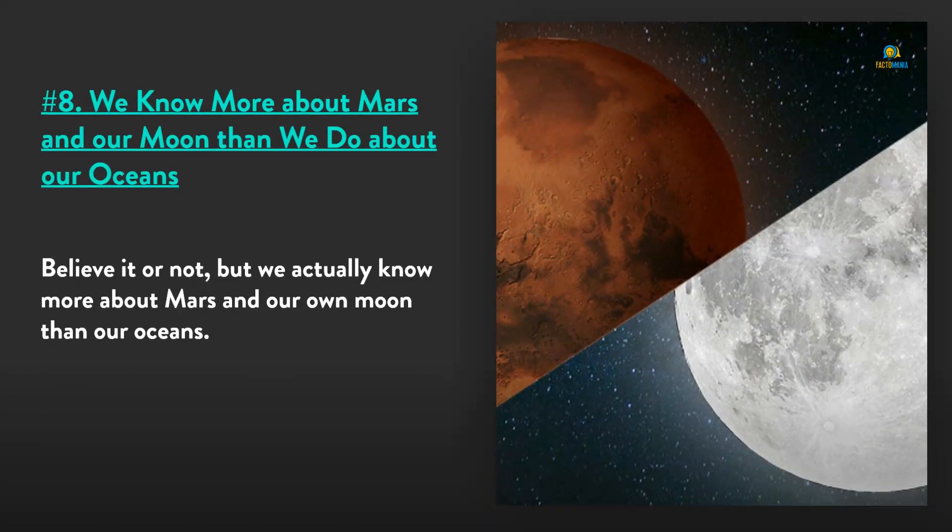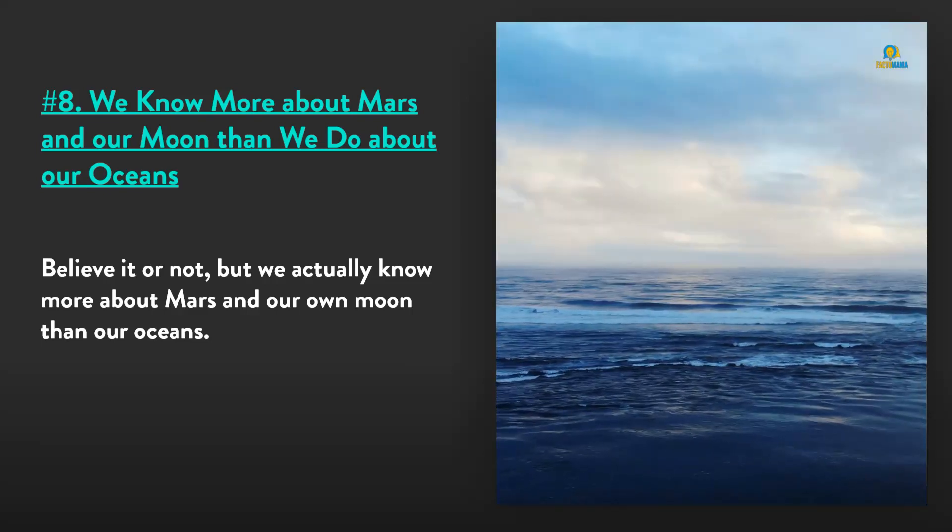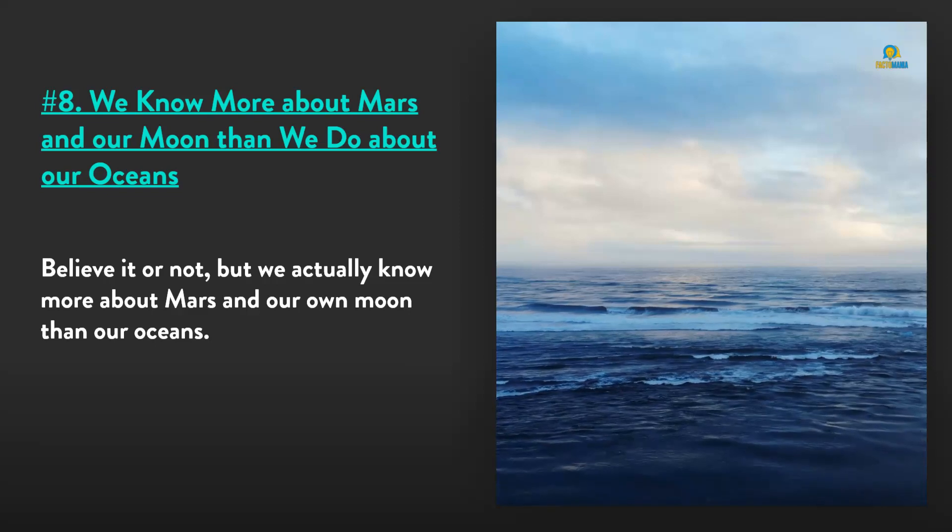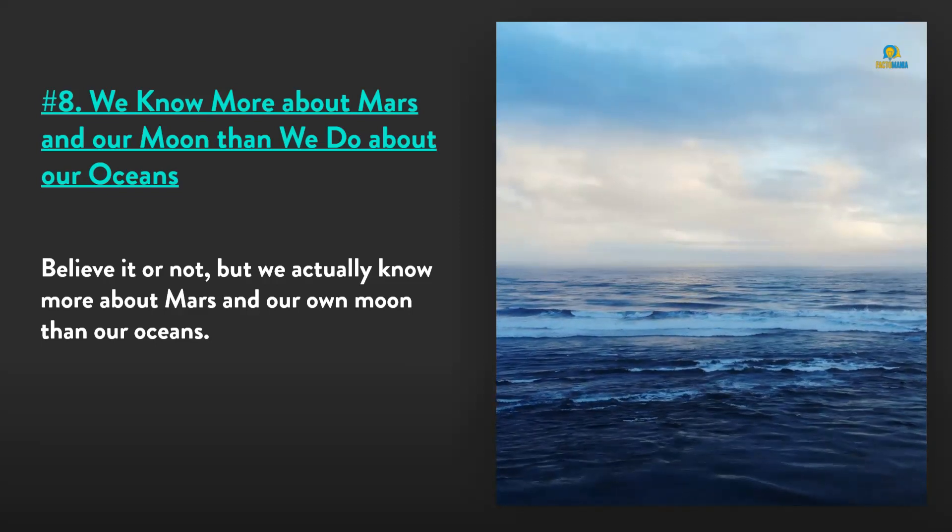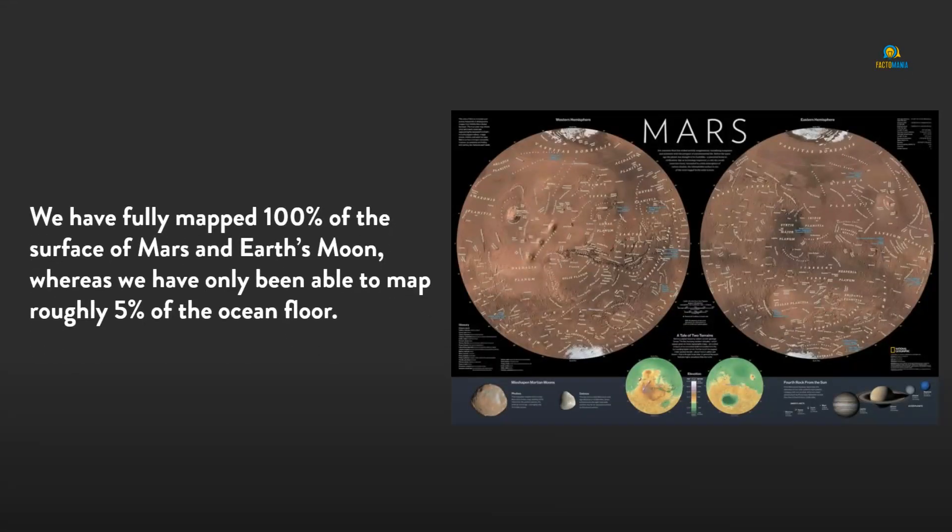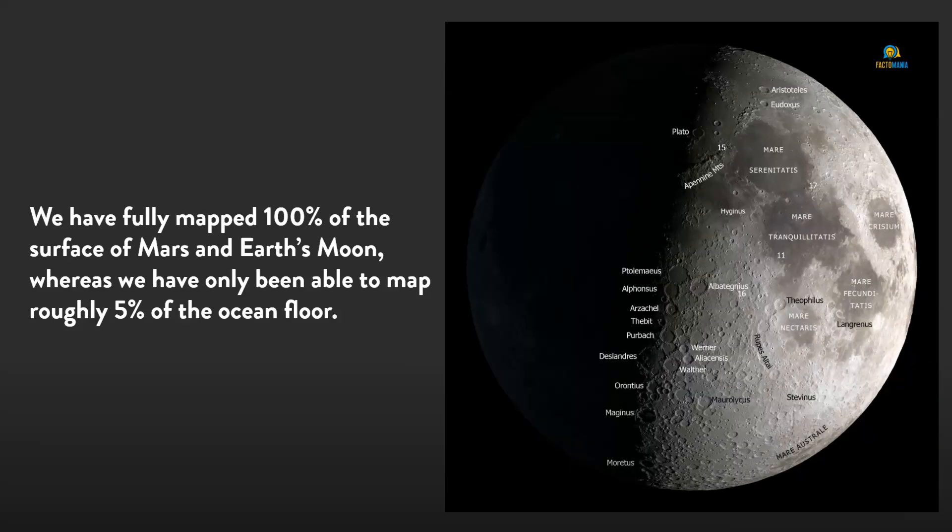Number 8: We know more about Mars and our moon than we do about our oceans. Believe it or not, but we actually know more about Mars and our moon than our oceans. We have fully mapped 100% of the surface of Mars and Earth's moon, whereas we have only been able to map roughly 5% of the ocean floor.